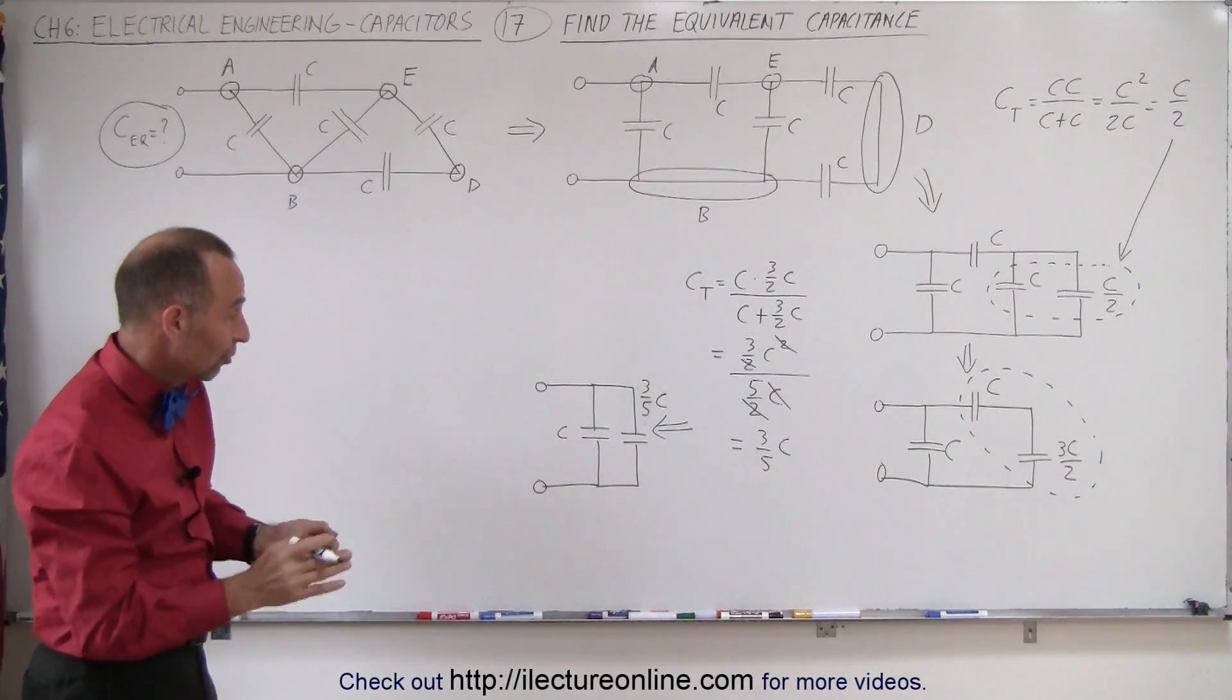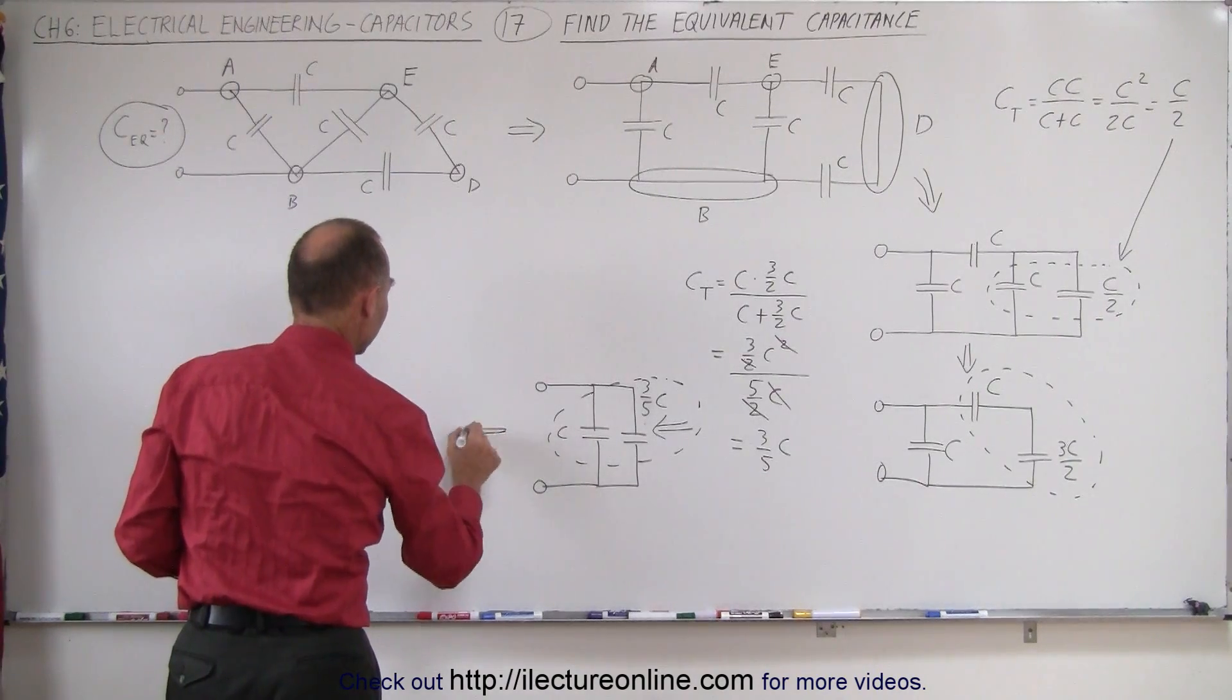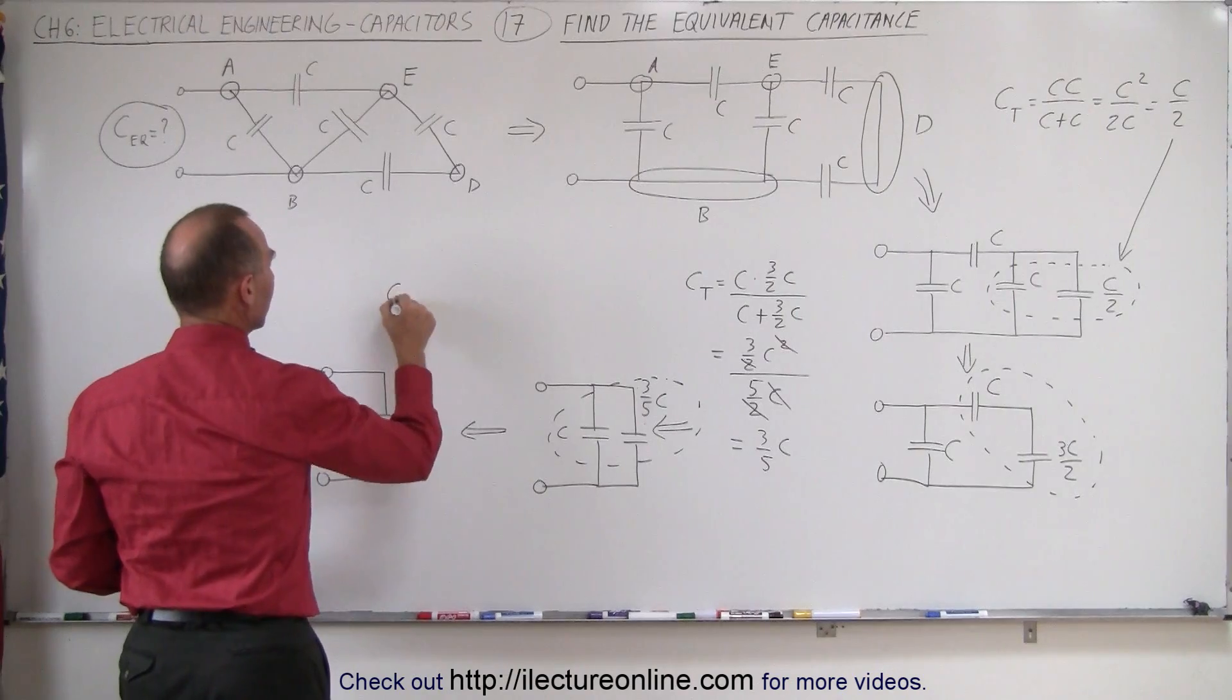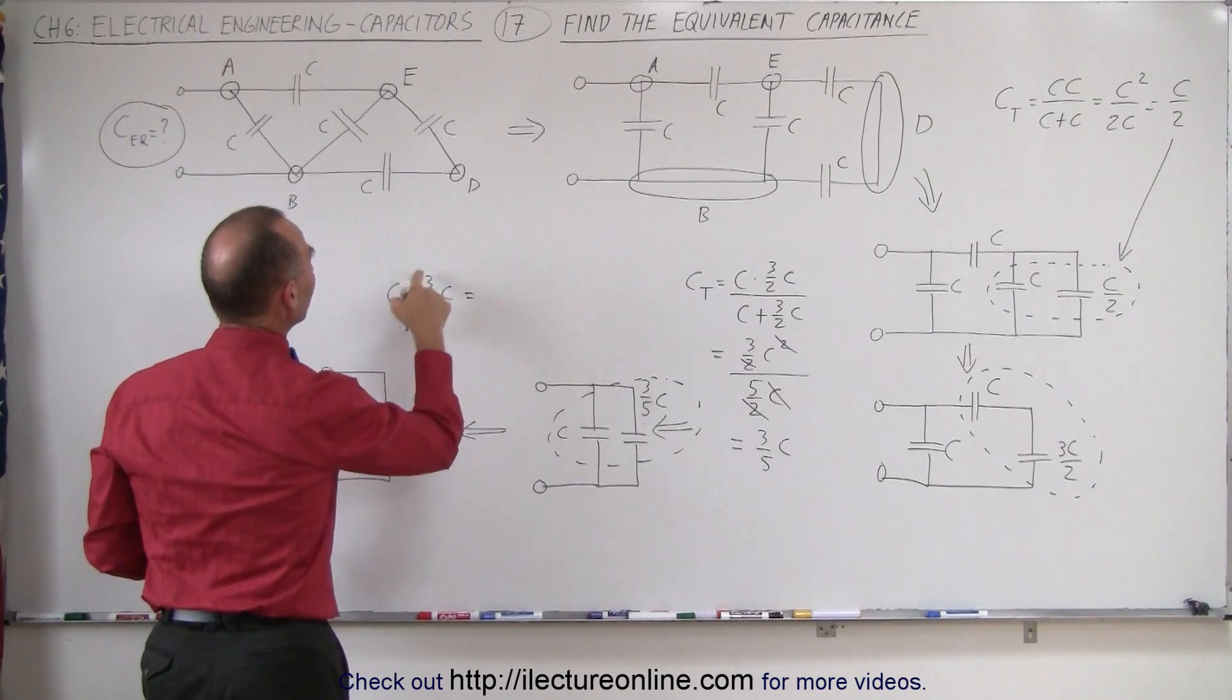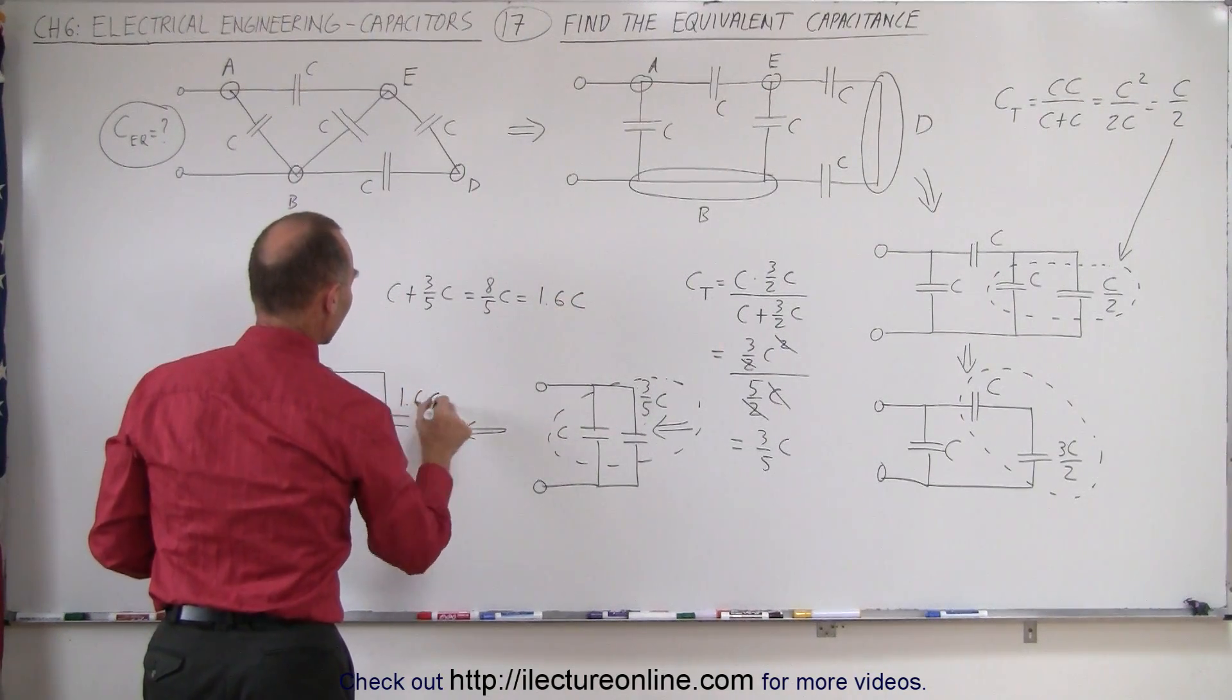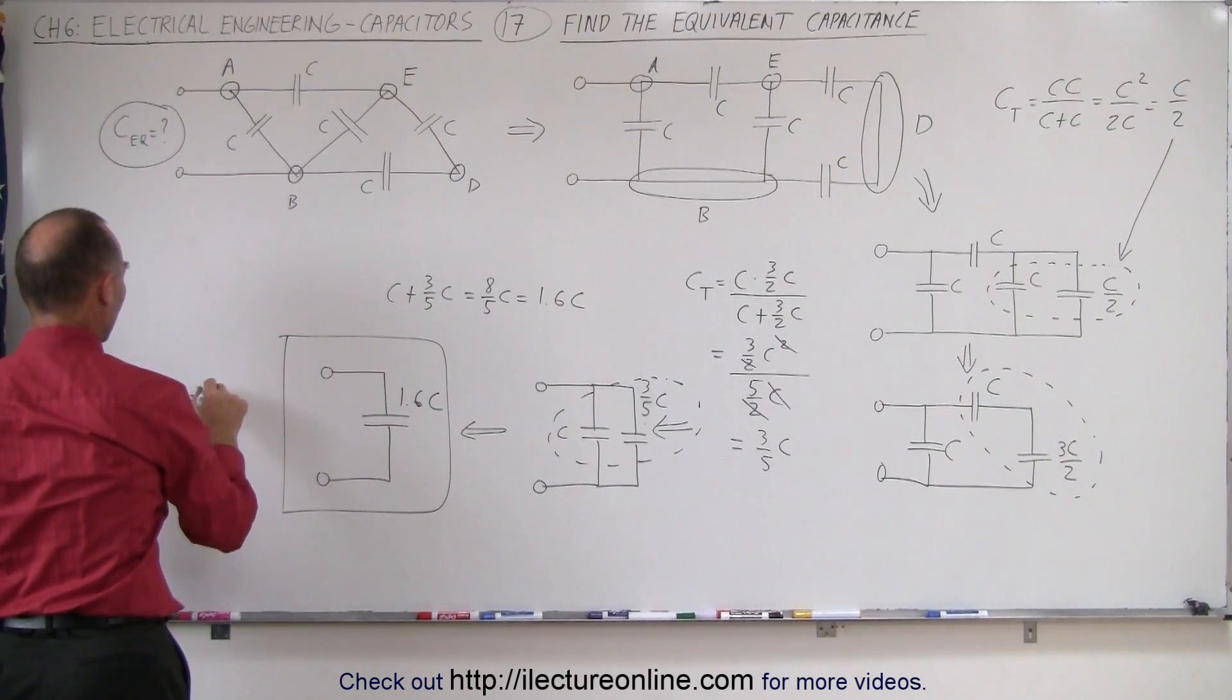All right. So now I have two capacitors, which are in parallel. I can combine those two now. Again, when capacitors are in parallel, you simply add them together. This now becomes a single capacitor. When you add them together, it's C plus 3 over, not half, but 3 fifths C, which is equal to 5 fifths plus 3 fifths, which is 8 fifths C, which is 1.6 C. So this becomes 1.6 times the capacitance of these capacitors. And this is what we call the equivalent circuit, and the equivalent capacitance is equal to 1.6 C.